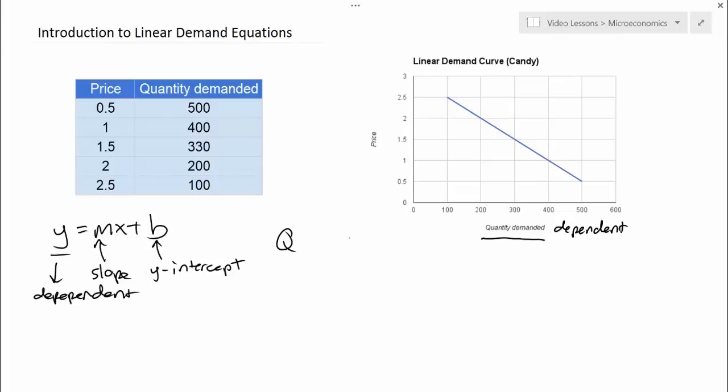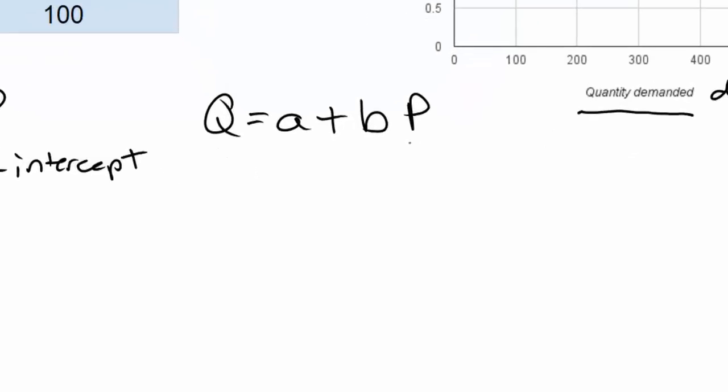And the equation we're going to use to represent the demand for a good can be expressed as follows: Q equals a plus b times the price. P is on the vertical axis, so basically we are taking what would normally be the dependent variable, the value on the vertical axis, and making that our independent variable. So in this case Q depends, this is dependent, on price which is independent.